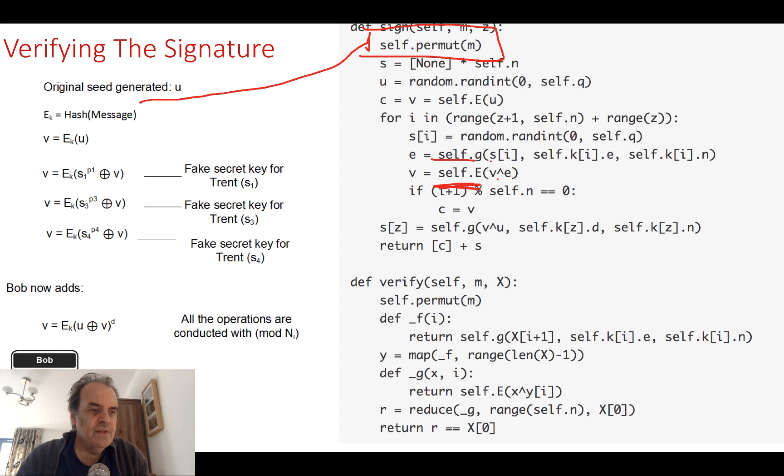Just remember that this here is this to the power of this mod this. So that's equivalent to the function that we have over here. So we calculate our value of v here, and we're going to encrypt the value of u.